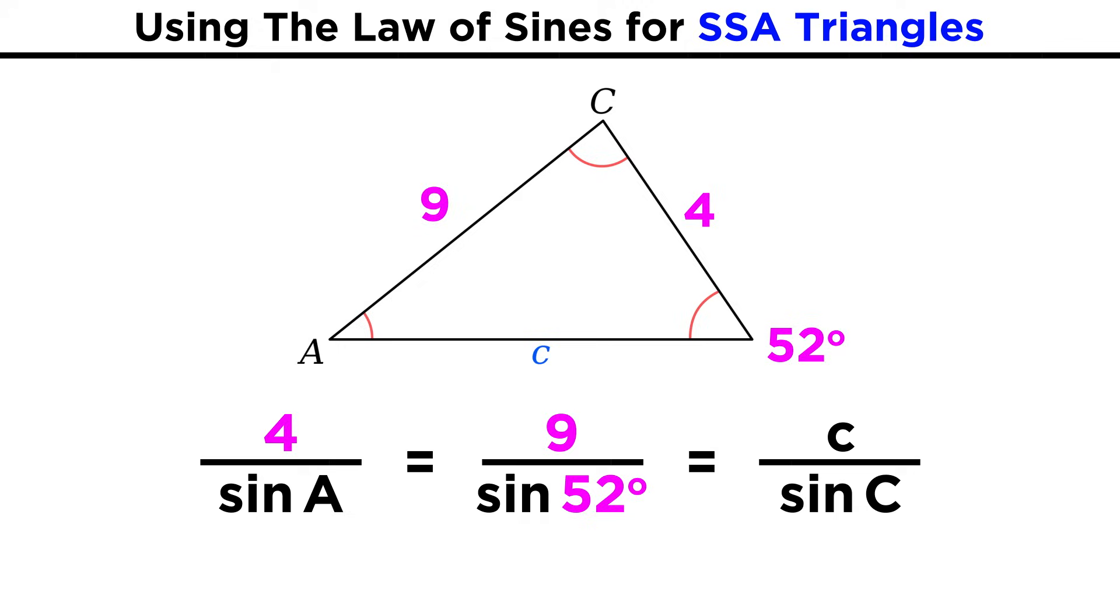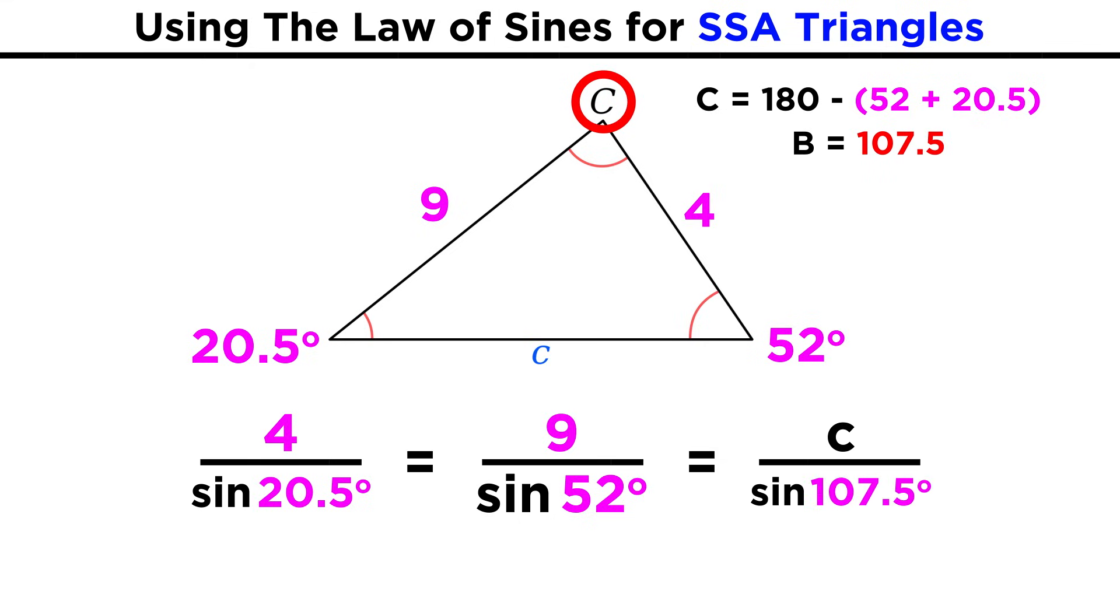Let's look at a slightly different scenario. Let's say we know two side lengths and one angle, which means side-side-angle. Here we have to first find the angle opposite this side length. Once we have that, we can subtract these two angles from 180 to get the third and find the third side length if we need to.